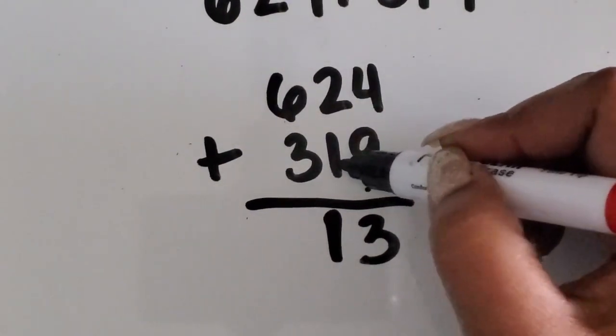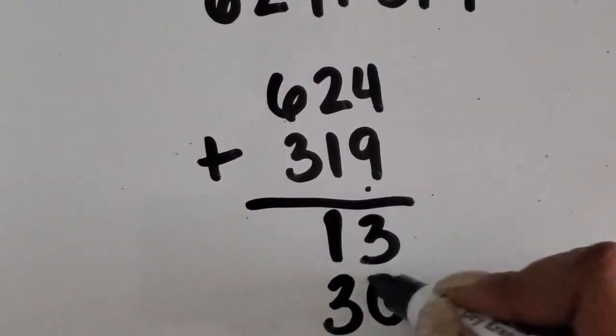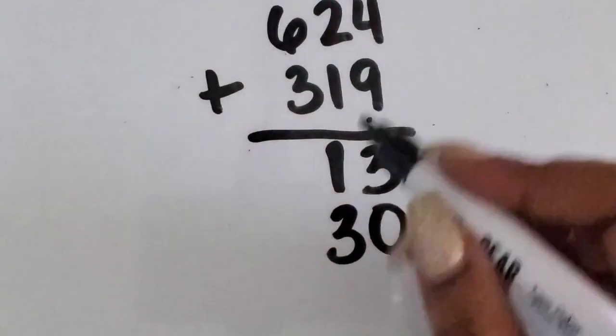Two tens plus one ten is thirty. Twenty plus ten is thirty. Six hundred plus three hundred is nine hundred.